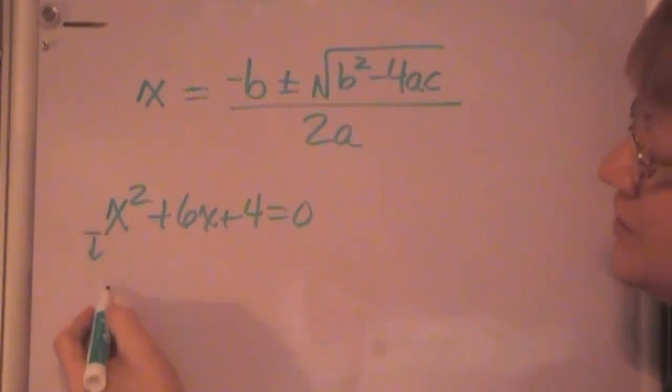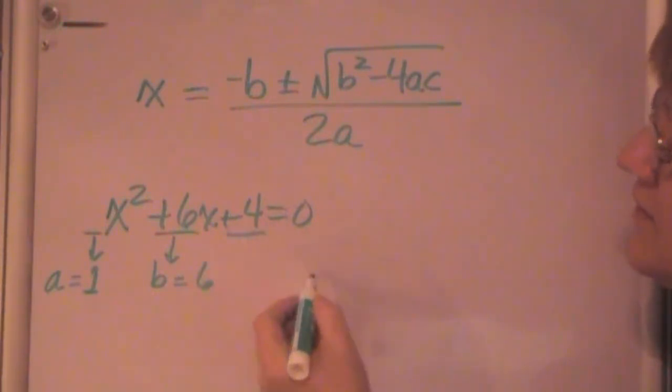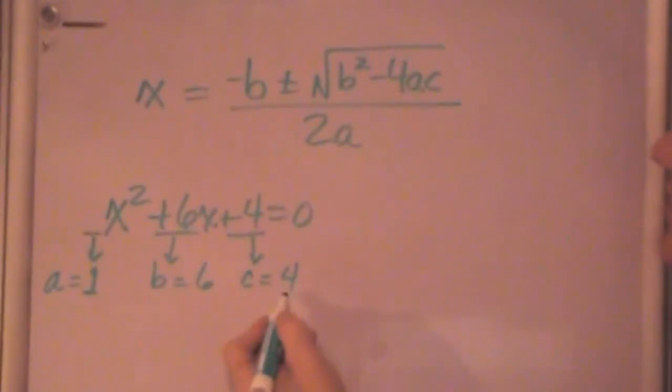The coefficient of the x² is just positive 1, so a is equal to 1. The coefficient of the x term is positive 6, so b is equal to 6. The c here, the number by itself, our constant term, is just positive 4. So that's equal to 4. There's where our a's, b's, and c's are, right there, when you put those in order.